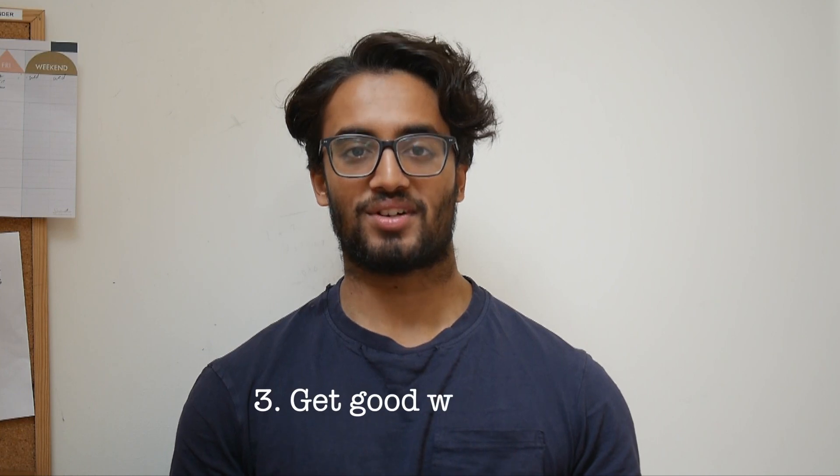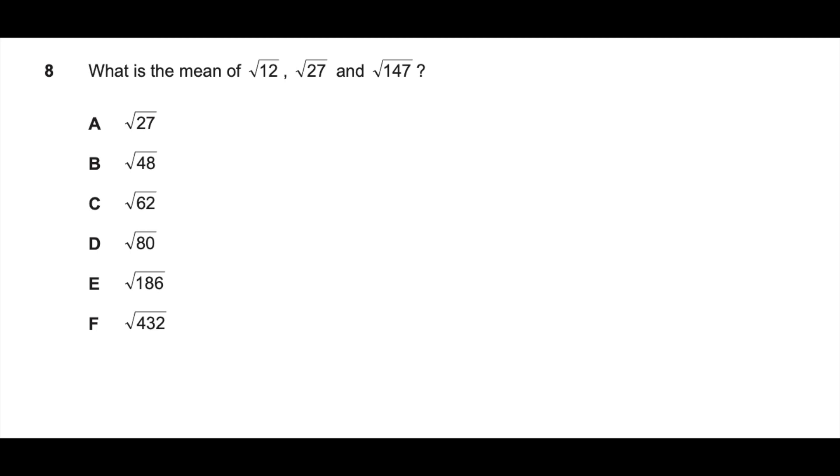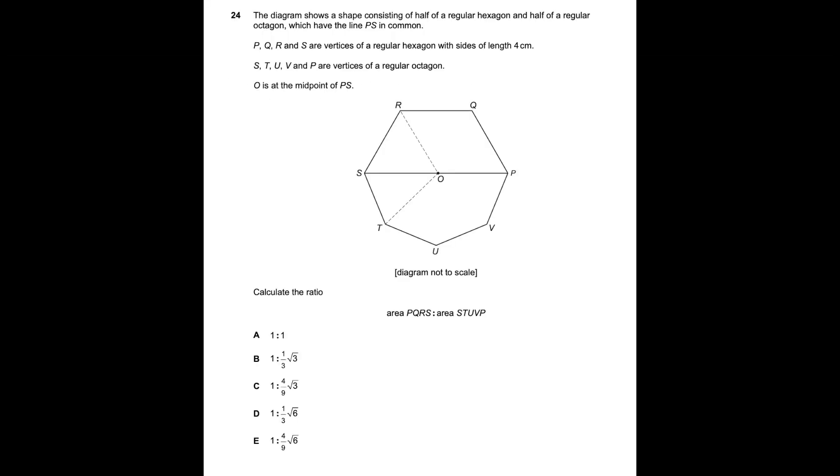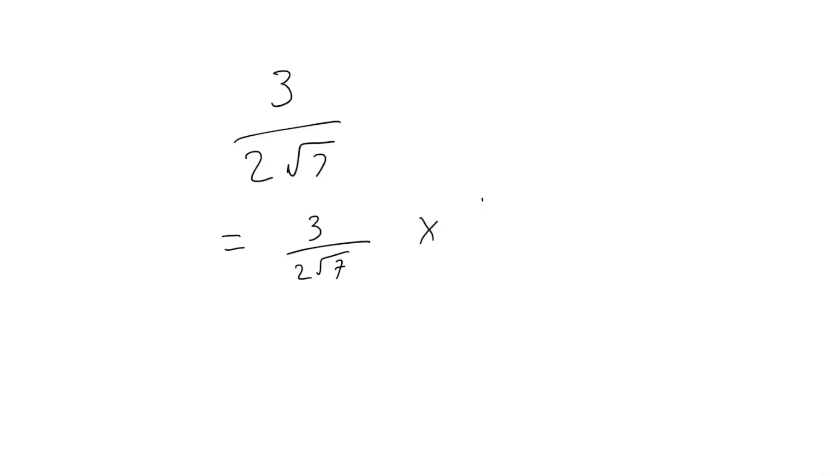My third tip for doing well in BMAT Section 2 Maths is getting good with surds. So surds is when you have square roots of a number that can't be square rooted and I've increasingly noticed in BMAT past papers that answer options are given in terms of surds and you have to deal with surds in the question. So I would definitely recommend practicing the process of rationalizing the surd and how you do this is you multiply both the numerator and denominator of the fraction you're working with by the surd part of the denominator. This will get rid of the surd on the bottom and give you a nice looking answer.